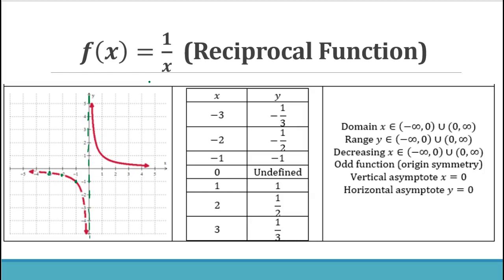We call x equals 0 a vertical asymptote. Plugging in 1, 2, and 3 gives 1, one-half, and one-third. As we continue plugging in 4, 5, 6, we get smaller and smaller numbers approaching the x-axis, which is a horizontal asymptote at y equals 0. Properties of 1/x: domain and range both exclude 0, it is a decreasing function, an odd function with origin symmetry, vertical asymptote x equals 0, and horizontal asymptote y equals 0.